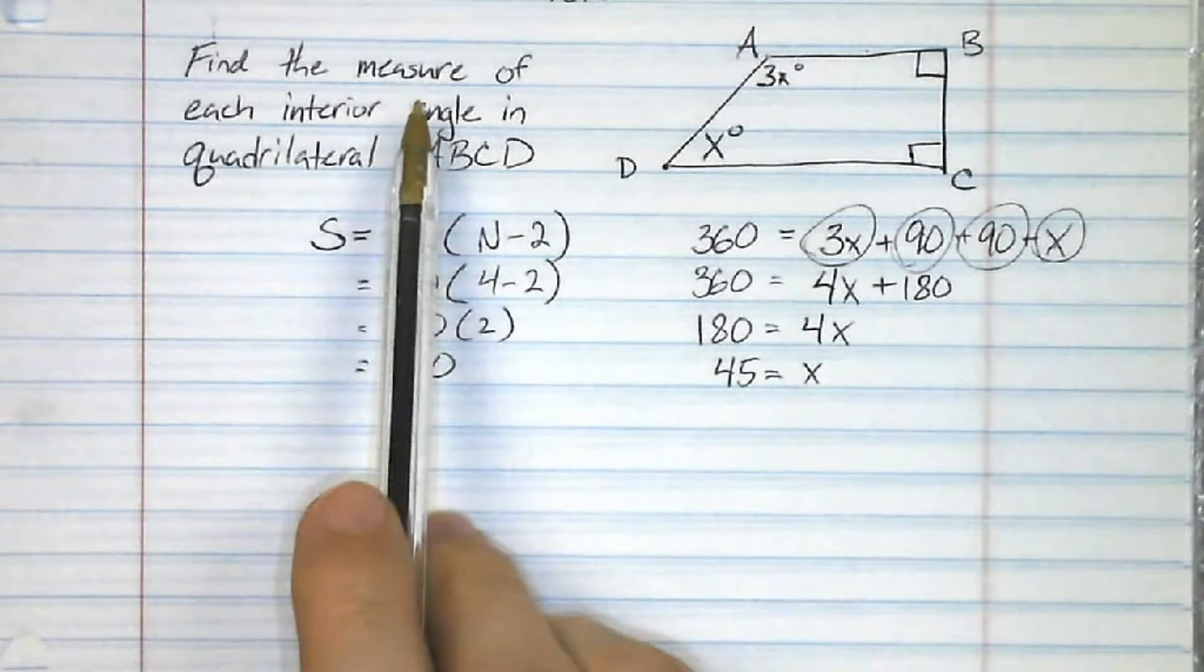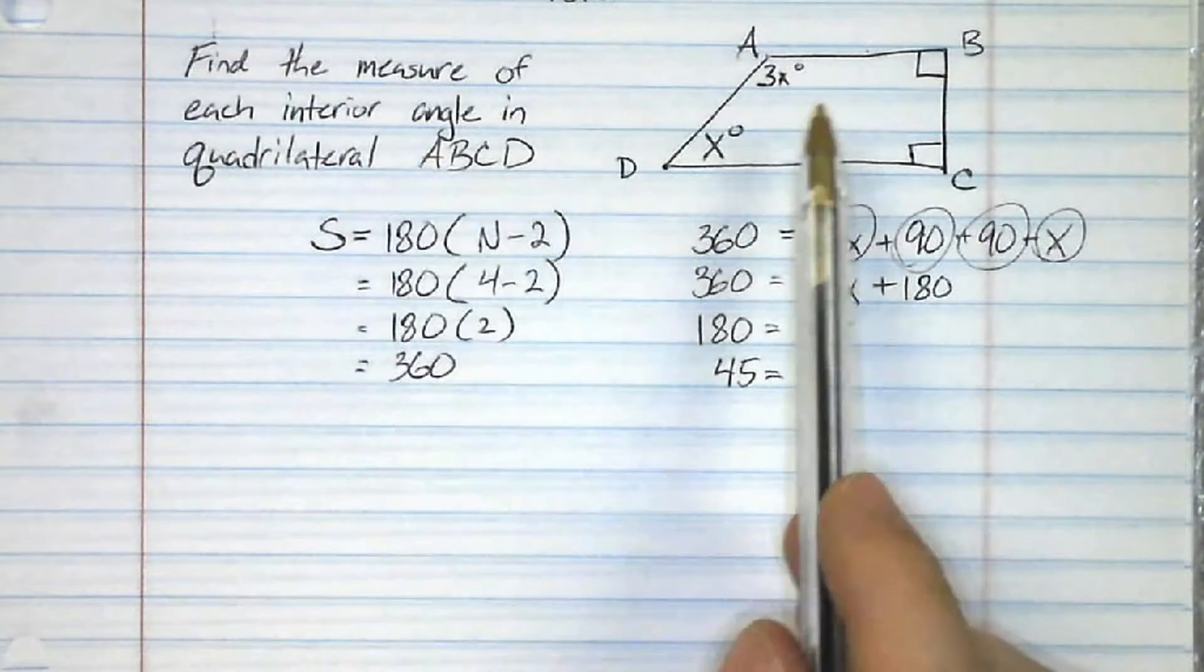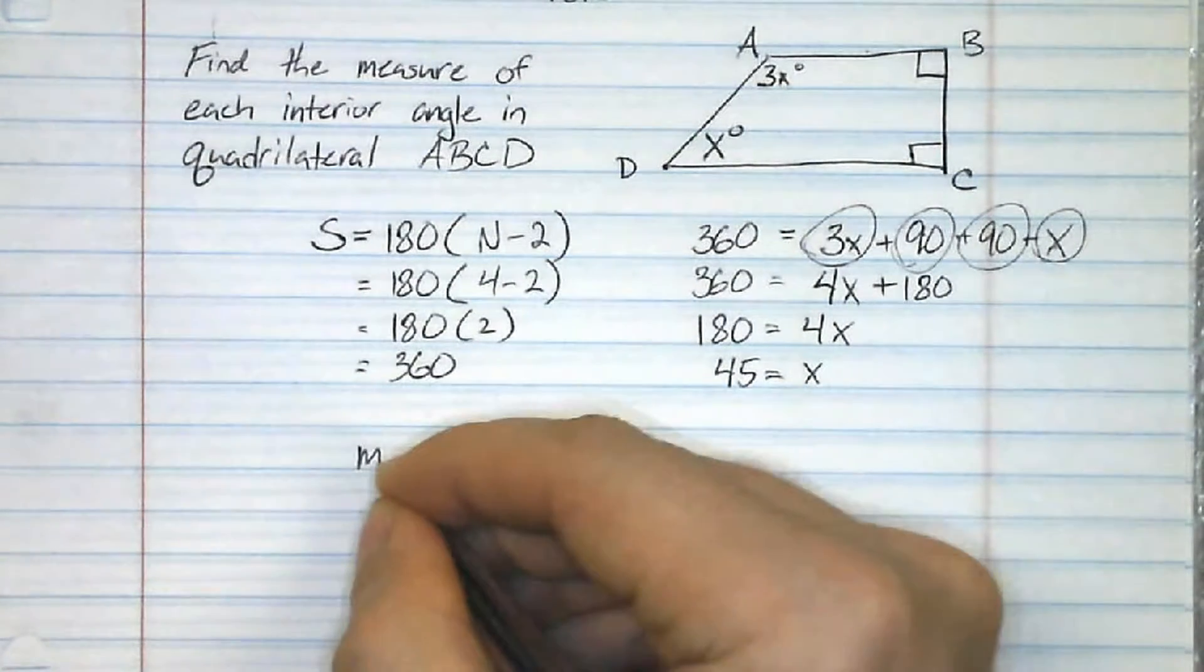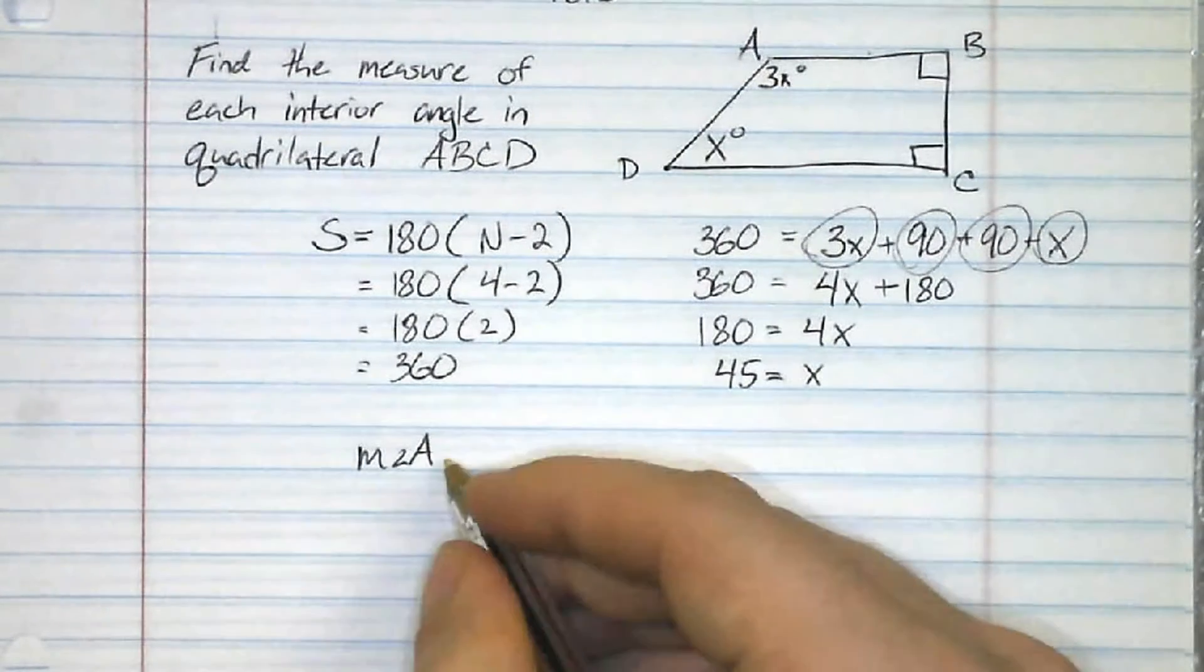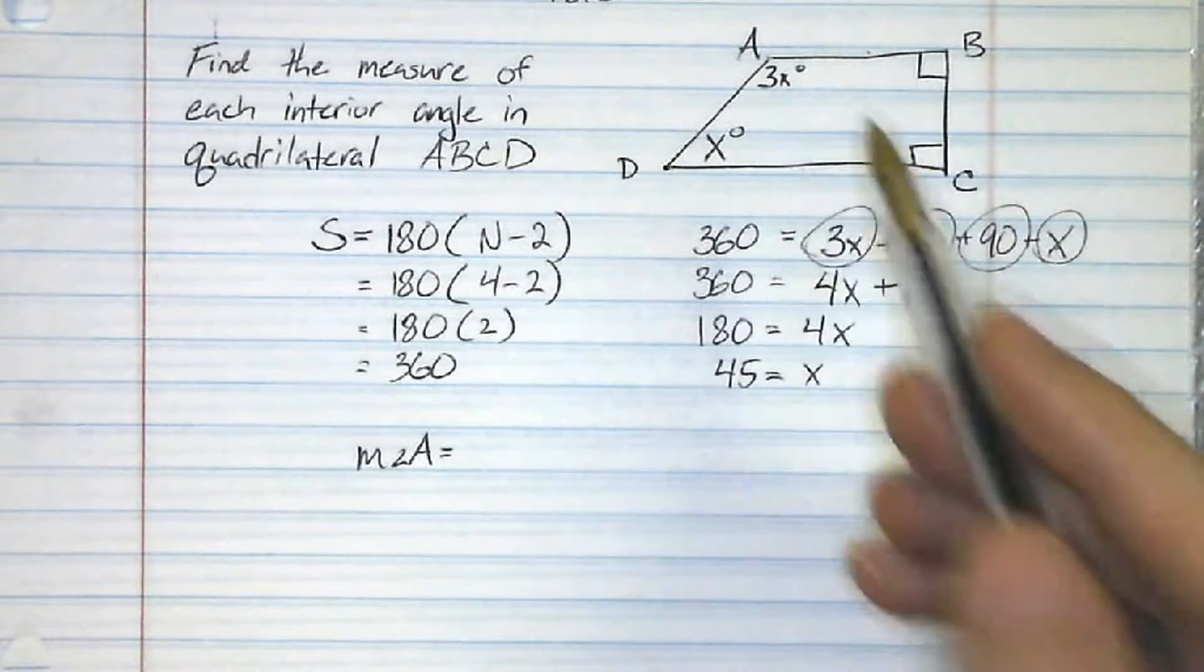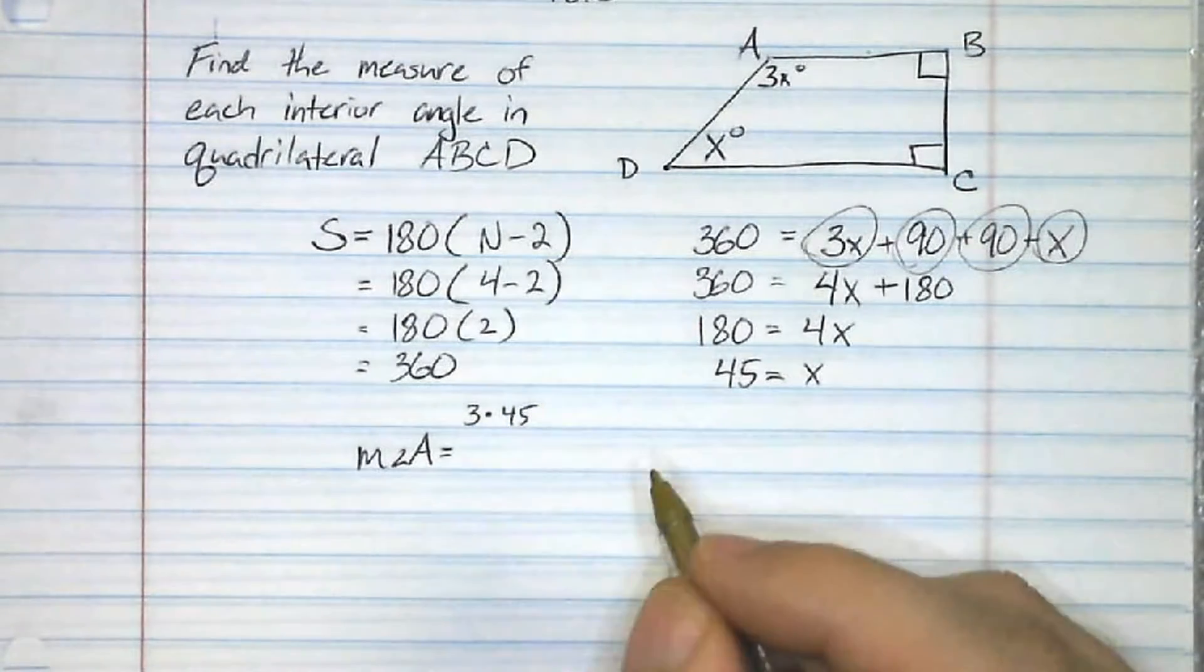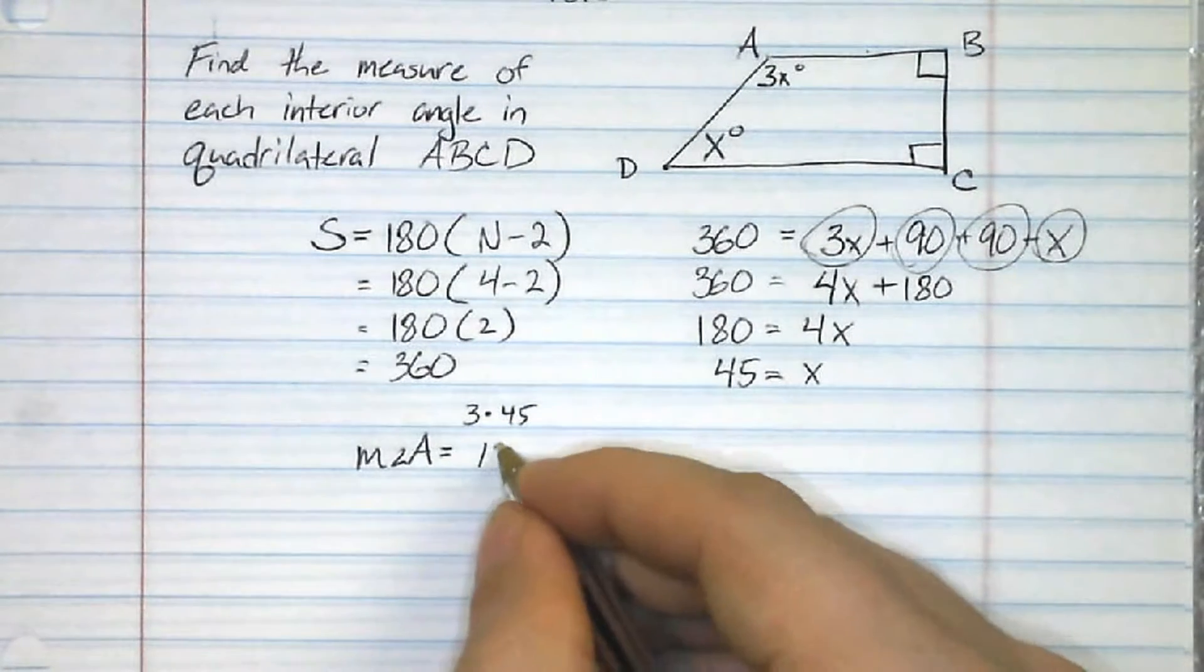Remember, the question wanted to know the measure of each interior angle, so each one specifically. So for the measure of angle A, I know the measure of angle A is 3 times x. So in this case, it would be 3 times 45, and 3 times 45 is 135.